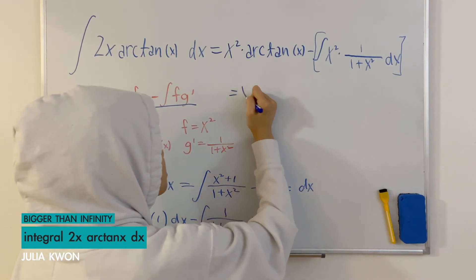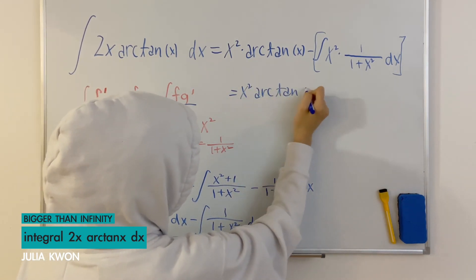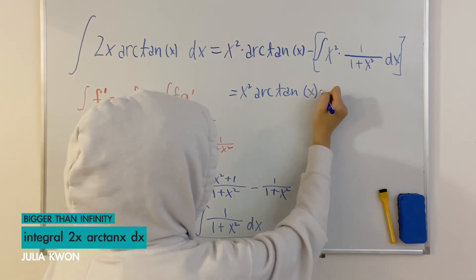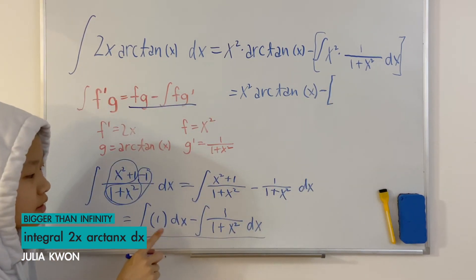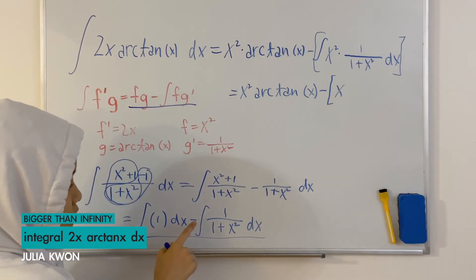Of course the x squared times arctangent x will stay the same and subtract it with the integral of 1 dx which is equal to x minus the integral of